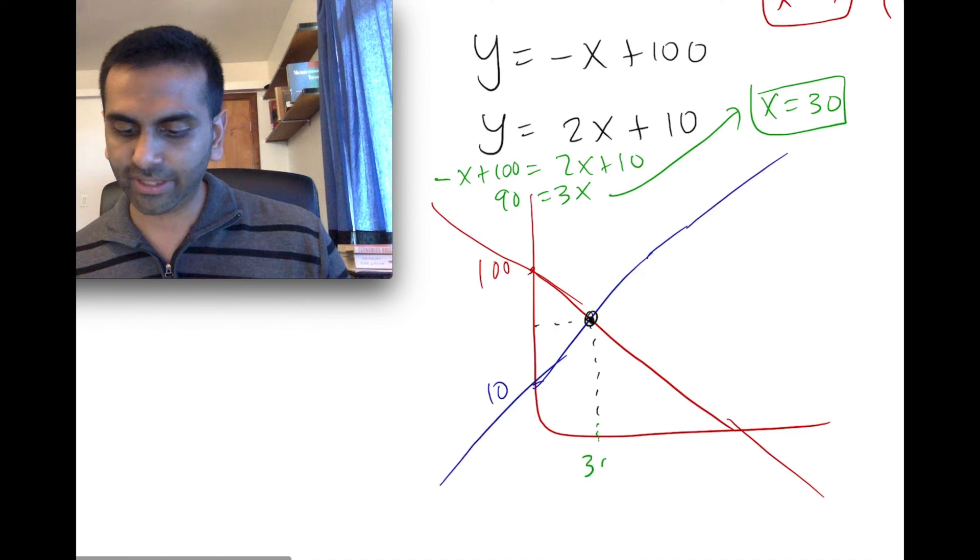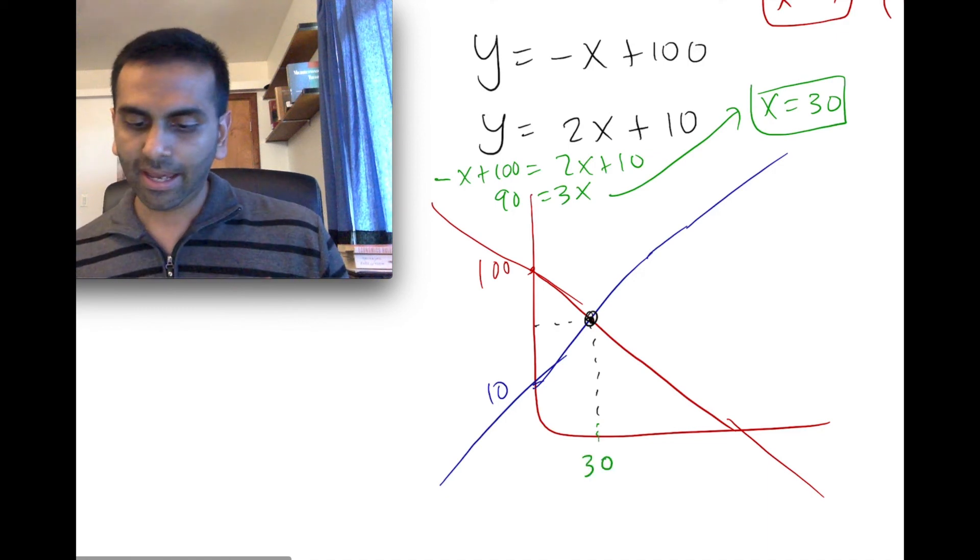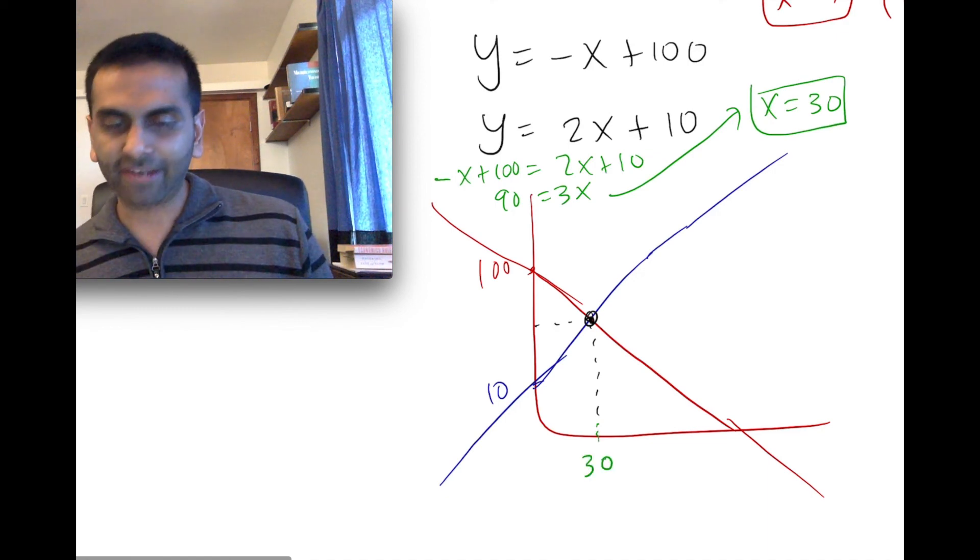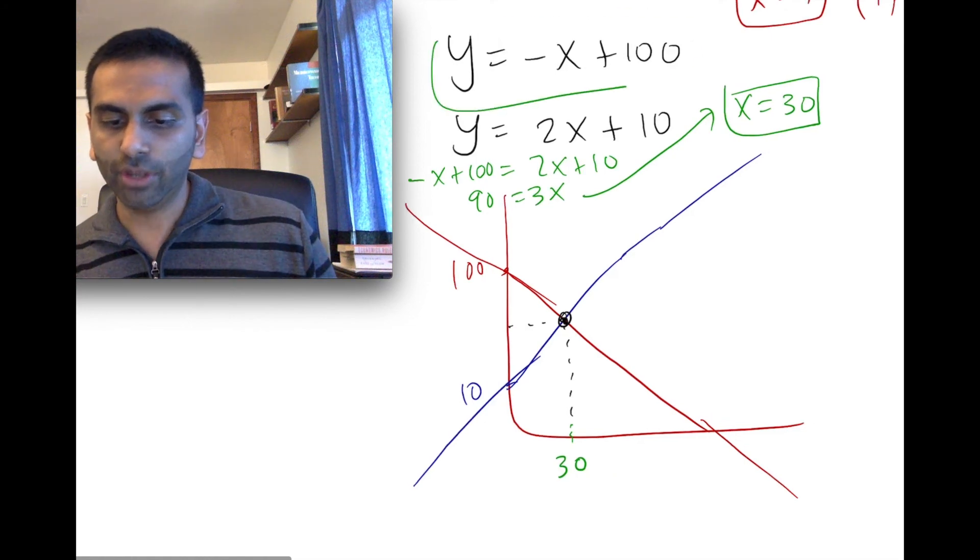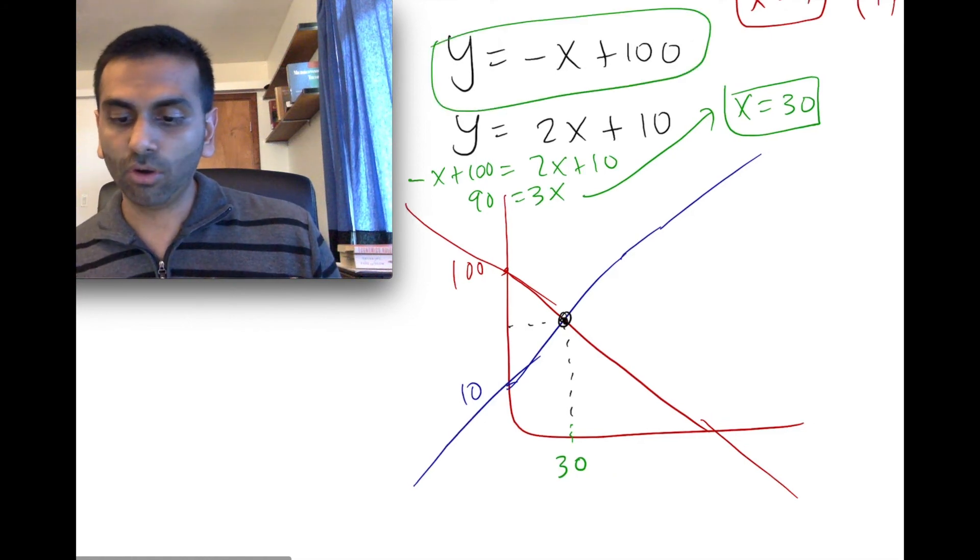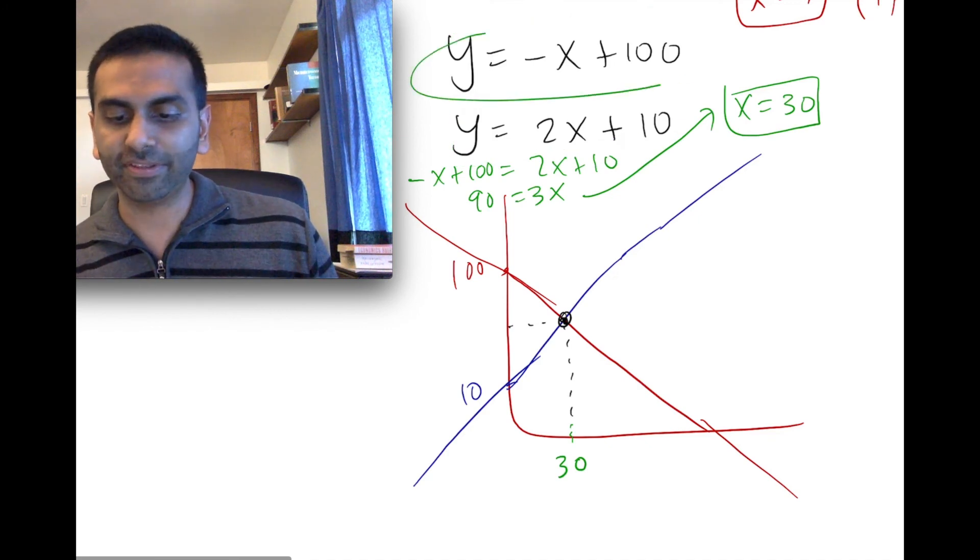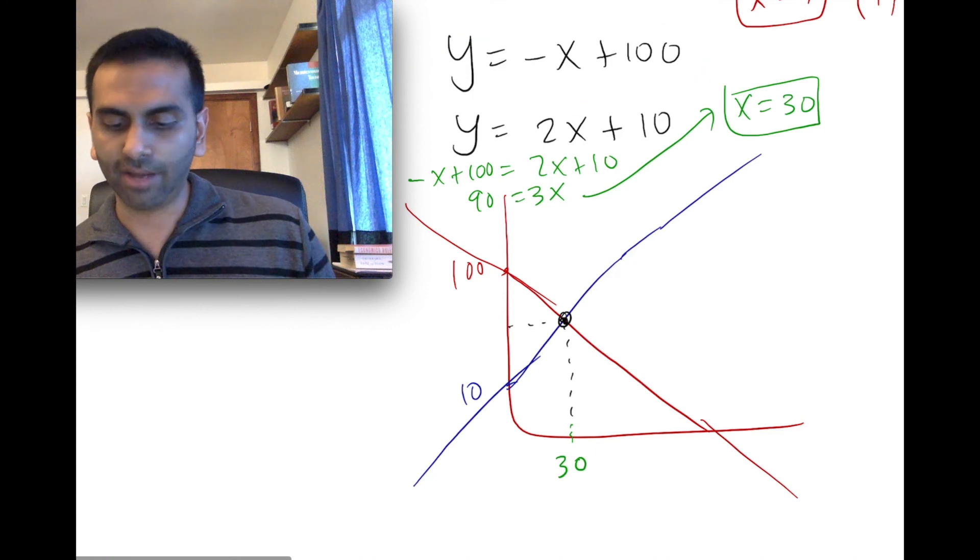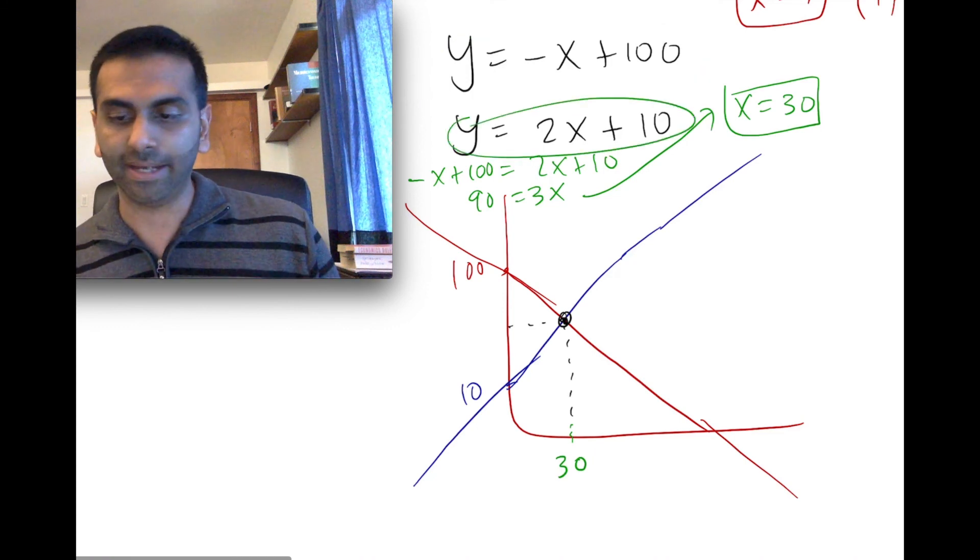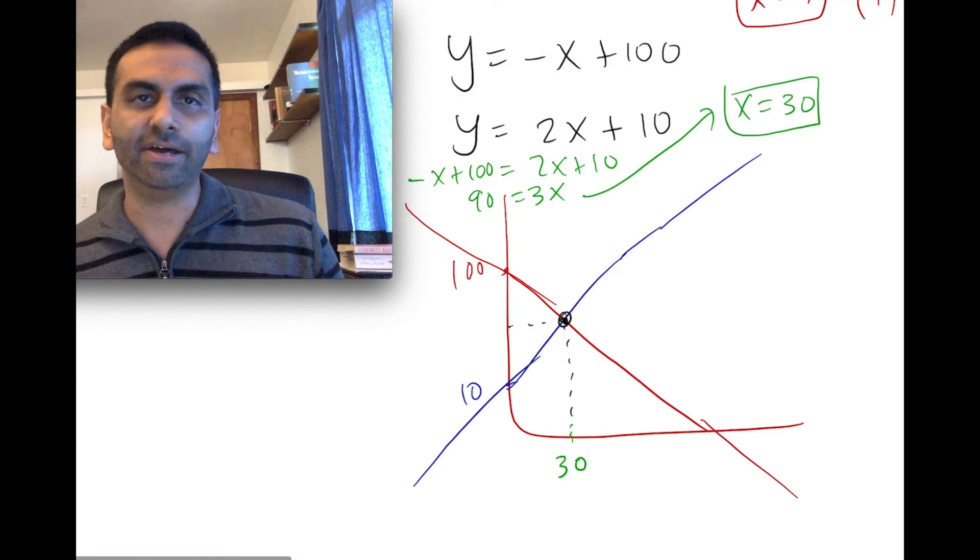Alright, so x equals 30. That seems reasonable. And now, when you plug in x equals 30, notice you could plug it back in here, or you could plug it back in here. And in either case, you're saying when x is 30, what's the y value on this red line versus on this blue line? And which one should you plug it in to get your y value?